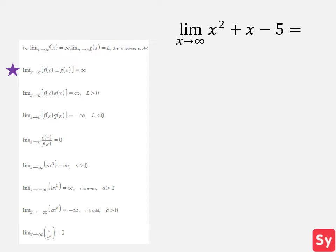In order to use this property, we have to have two functions where the limit of f of x as x approaches c is infinity and the limit of g of x as x approaches c is a constant. We'll set f of x equal to x squared plus x and g of x equal to 5. That way, we automatically know the limit of g of x is a constant.